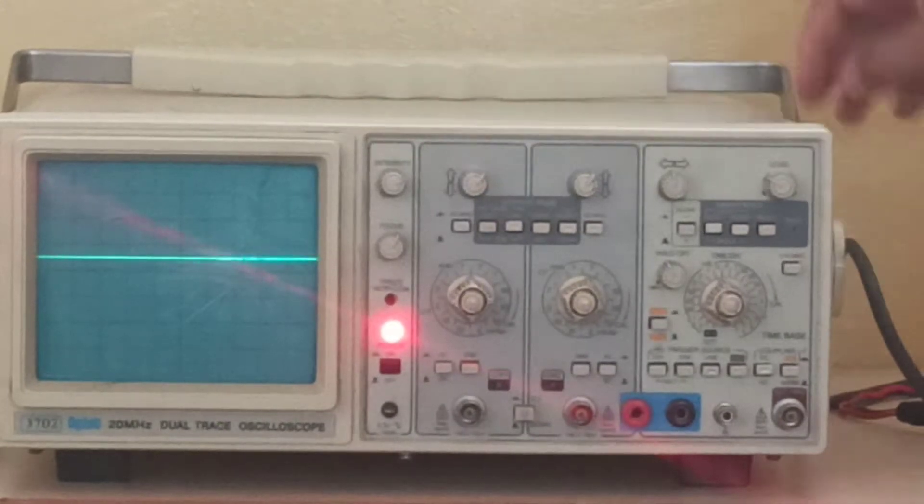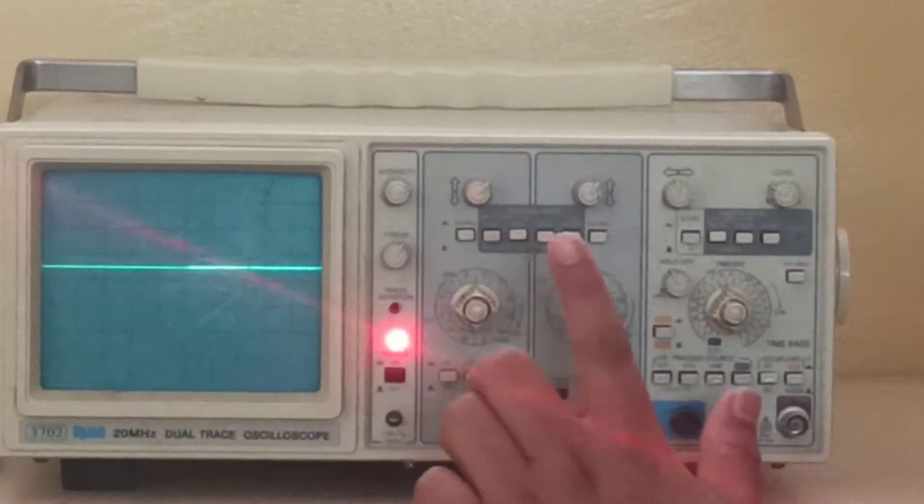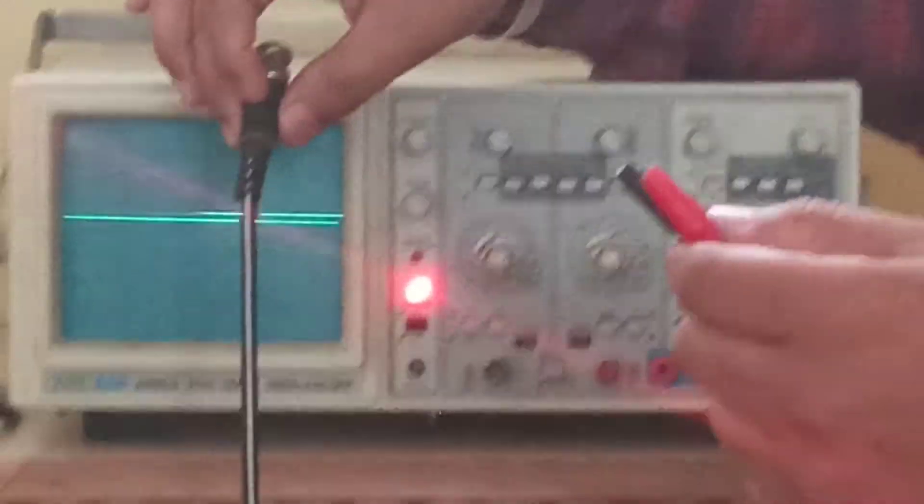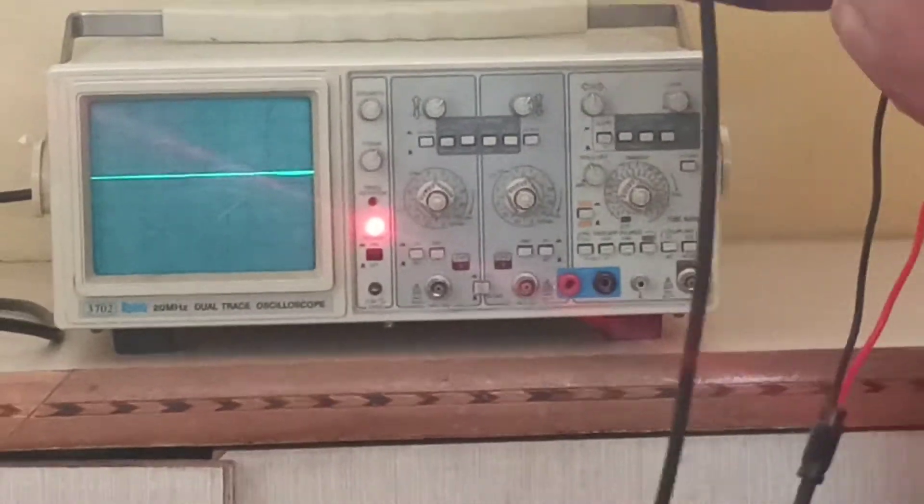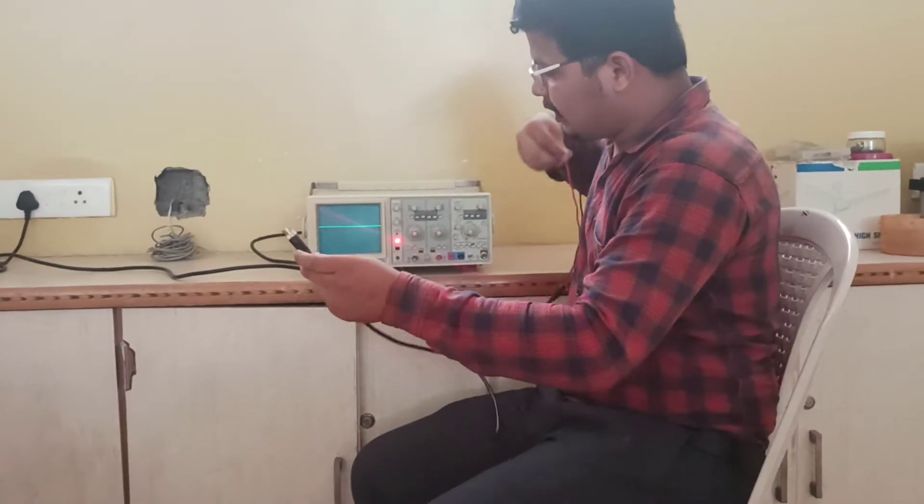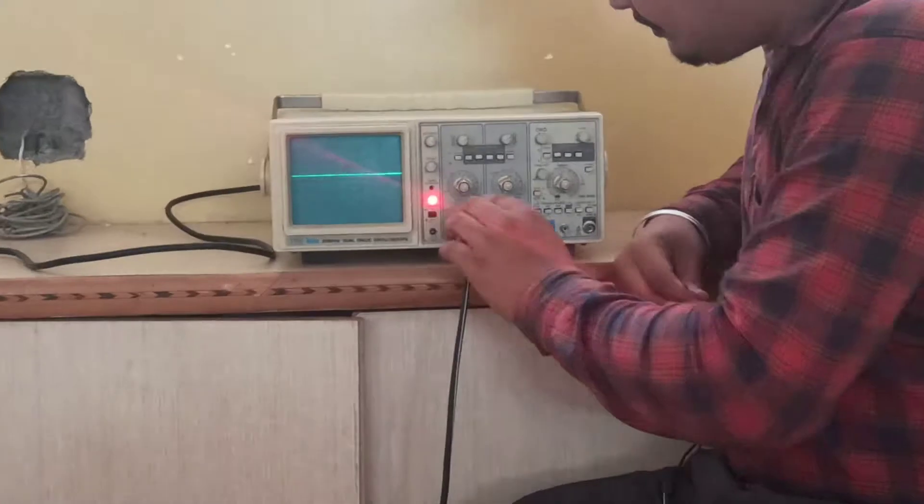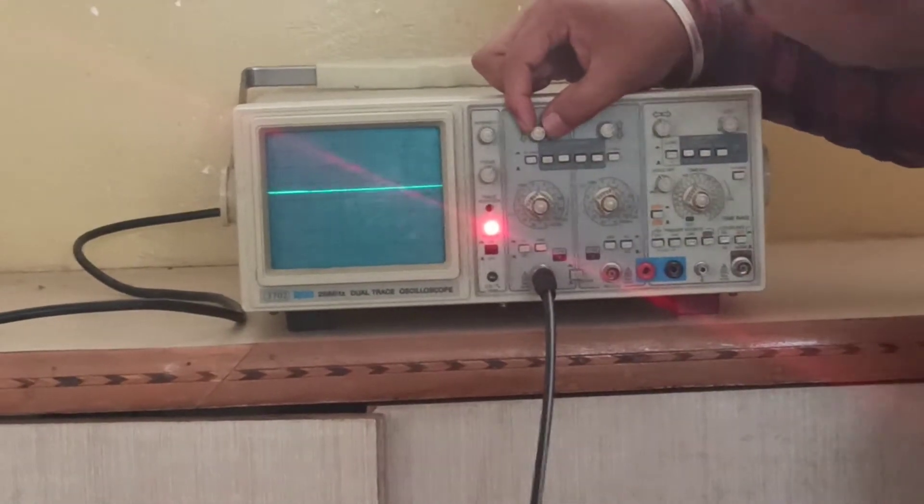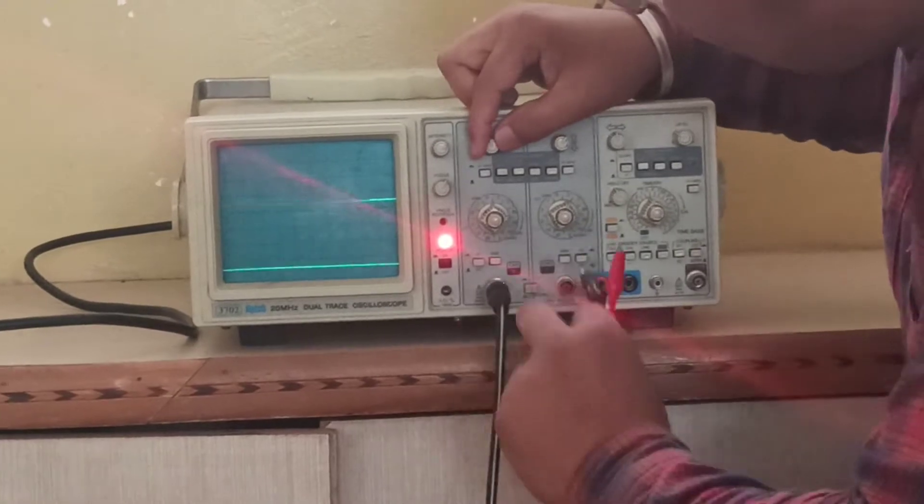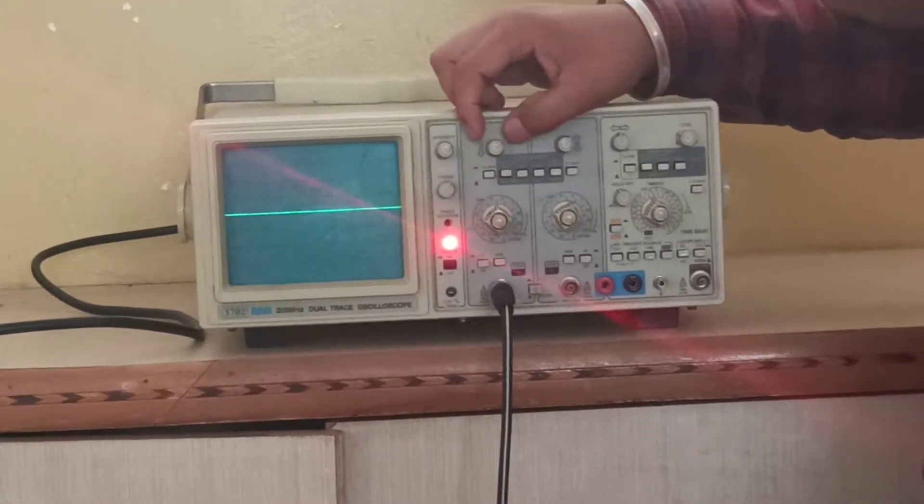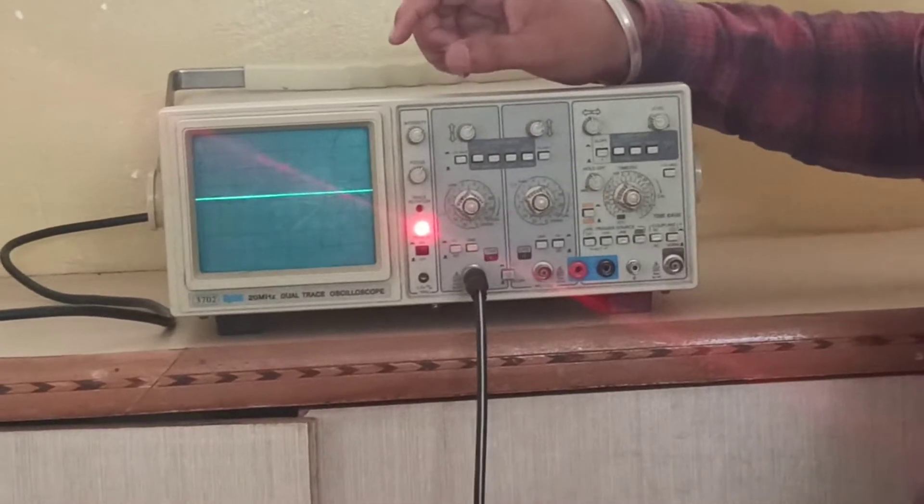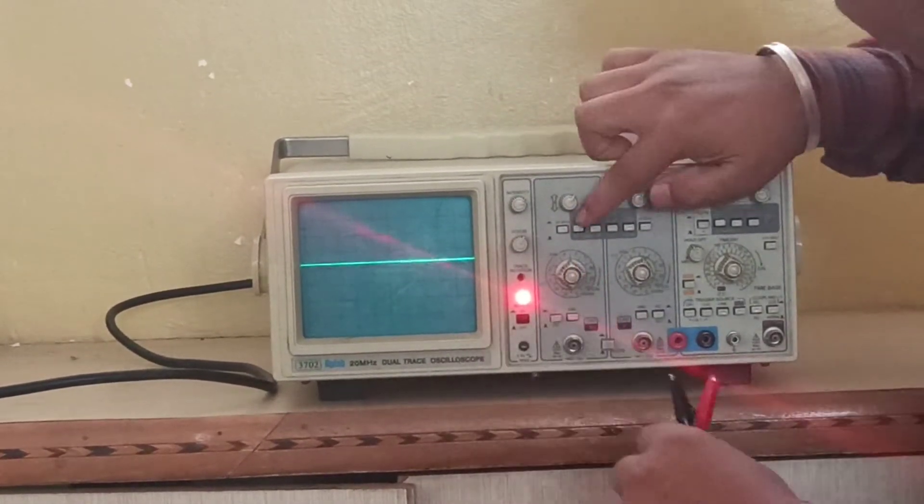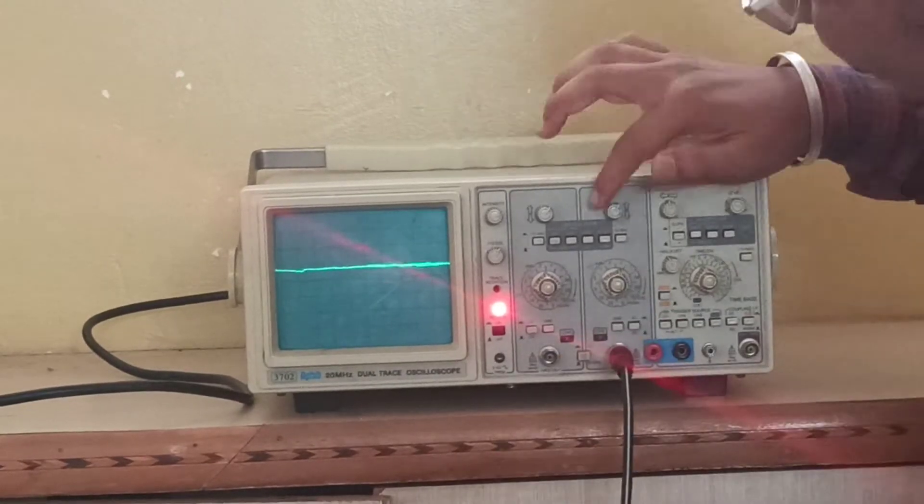Next, this is the channel 1 and channel 2. This is the CRO probe. The probe is the output. The circuit is positive and the ground connection is negative. This is the output. This is the channel 1 set.